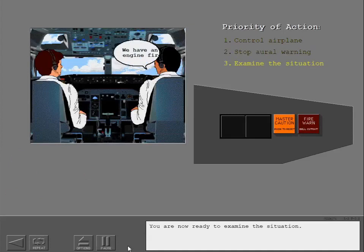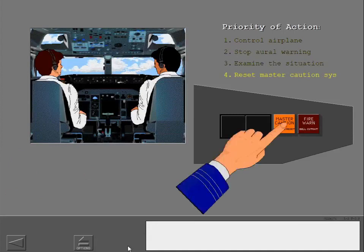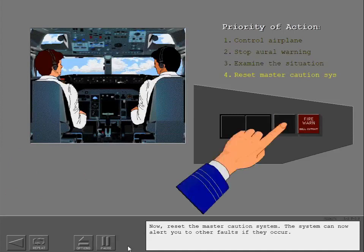You are now ready to examine the situation. Now, reset the master caution system. The system can then alert you to other faults if they occur.